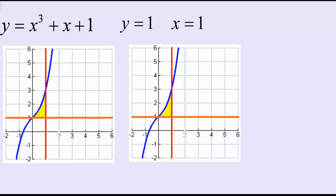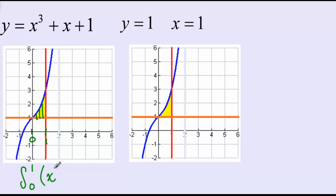One more example where things might go wrong: look at y equals x cubed plus x plus 1, above y equals 1, and to the left of x equals 1 — that's the yellow region here. If we're going to integrate that in terms of x, we would have the blue function on top minus the orange function on the bottom, so it would just look like the integral from 0 to 1 of x cubed plus x plus 1, minus our bottom function which is 1, dx.